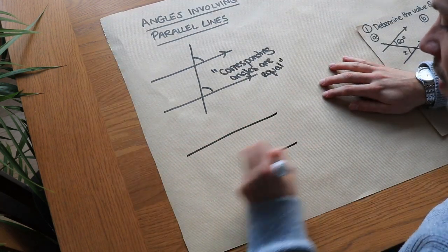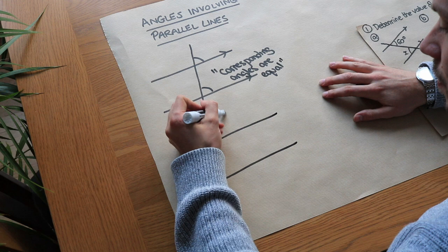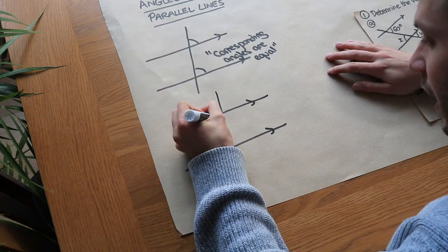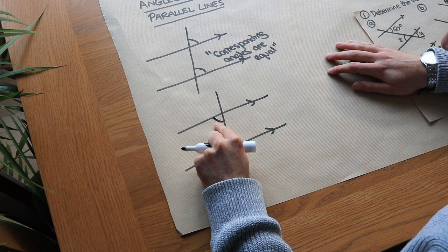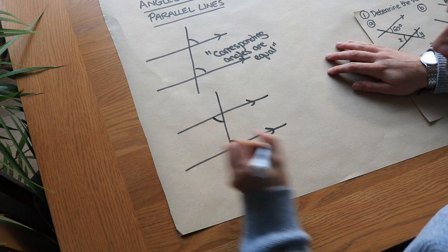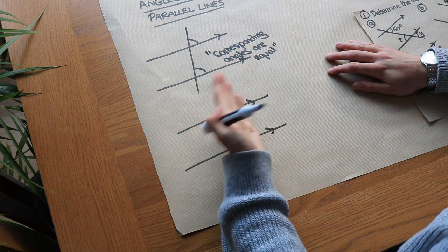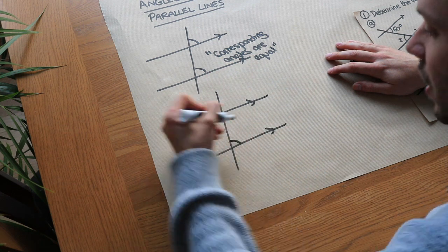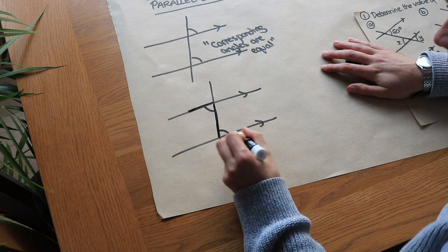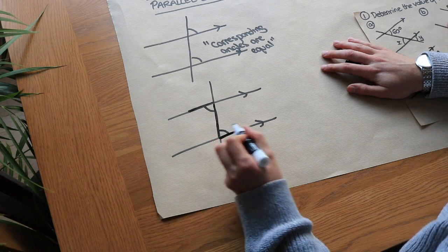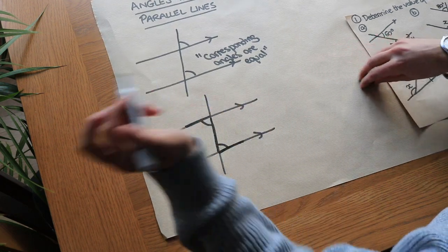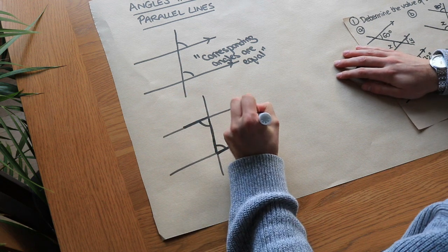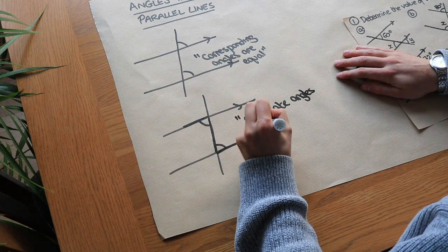If we take two parallel lines connected by a line, you can see this angle here is the same as this angle over there due to a certain symmetry. You can see a Z shape formed between them — sometimes called Z angles — but we actually call them alternate angles. Alternate angles are equal.